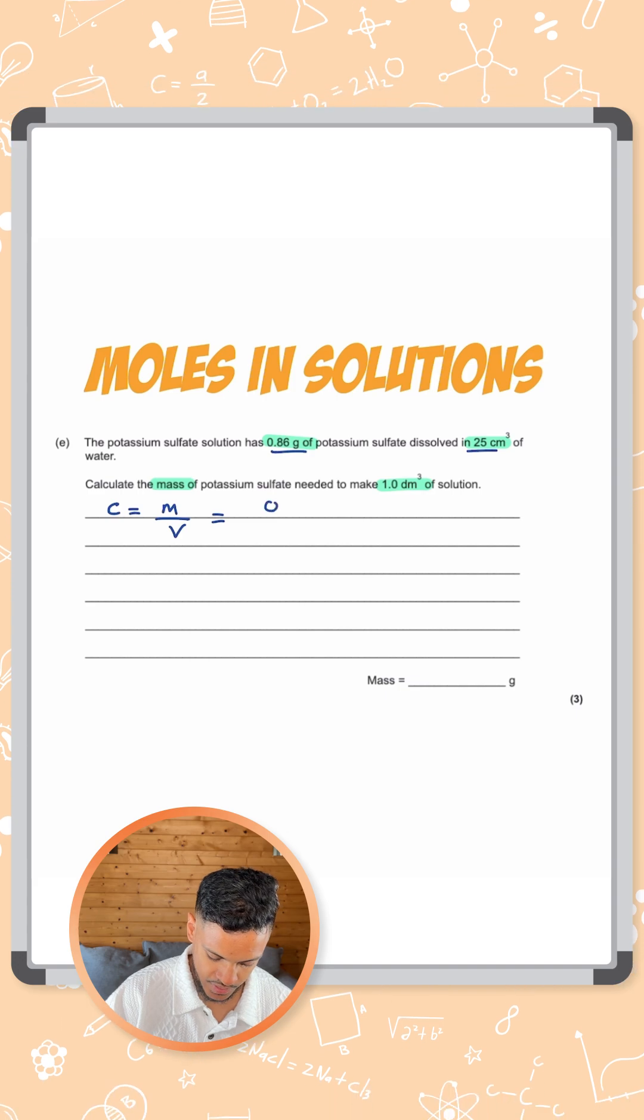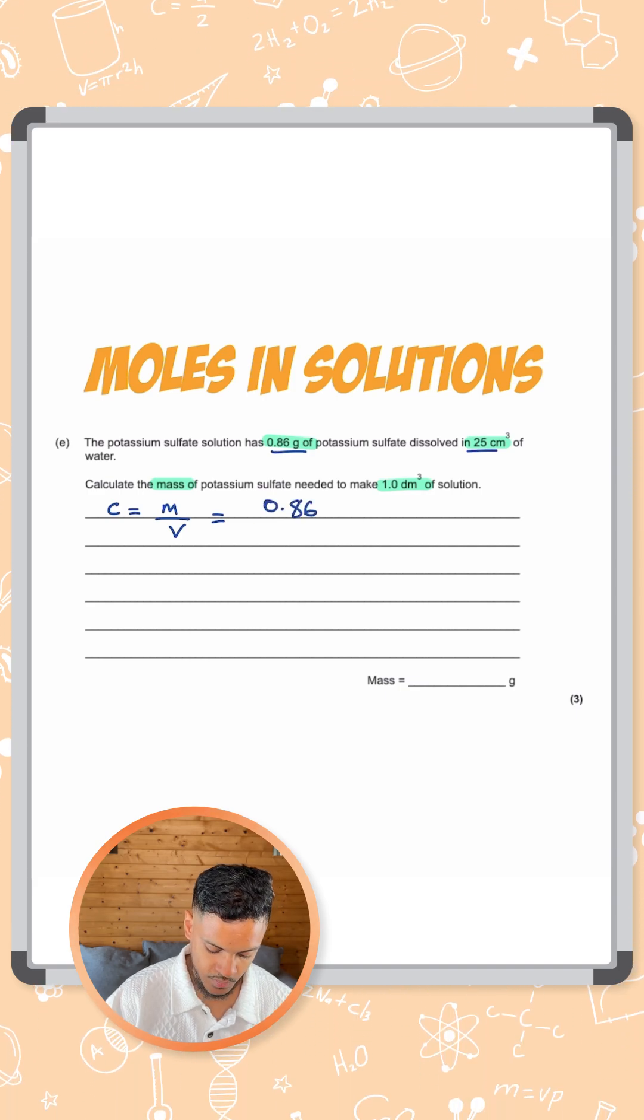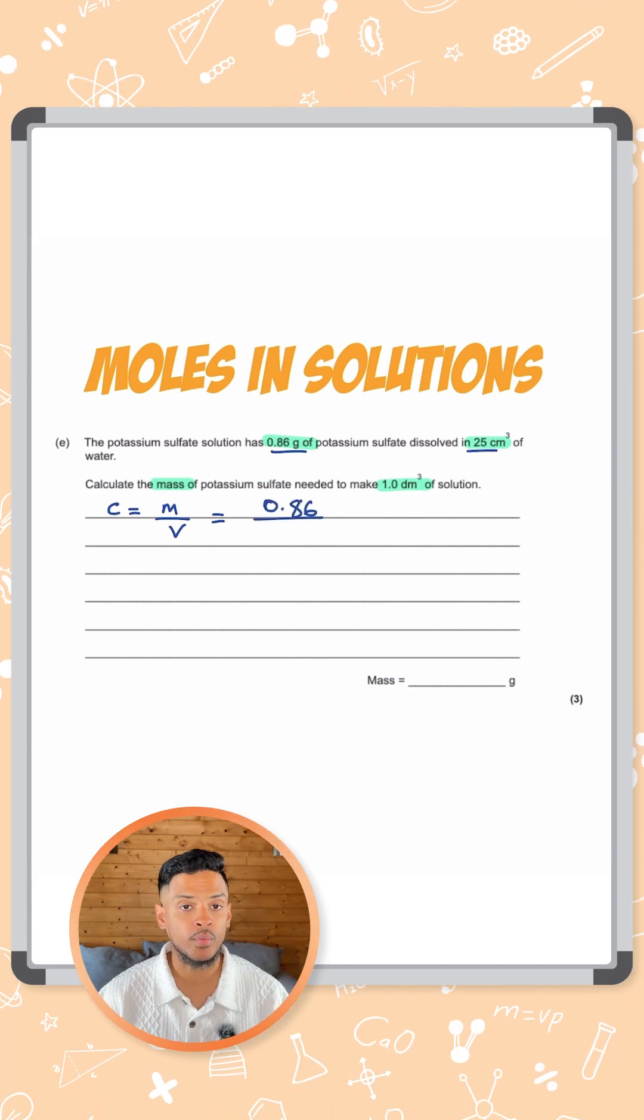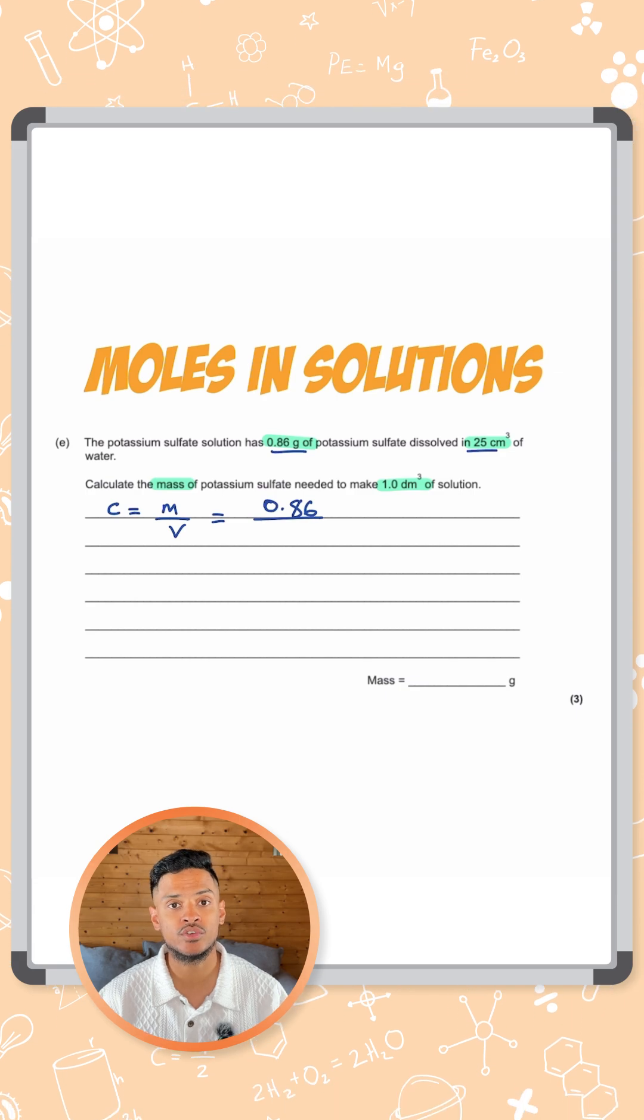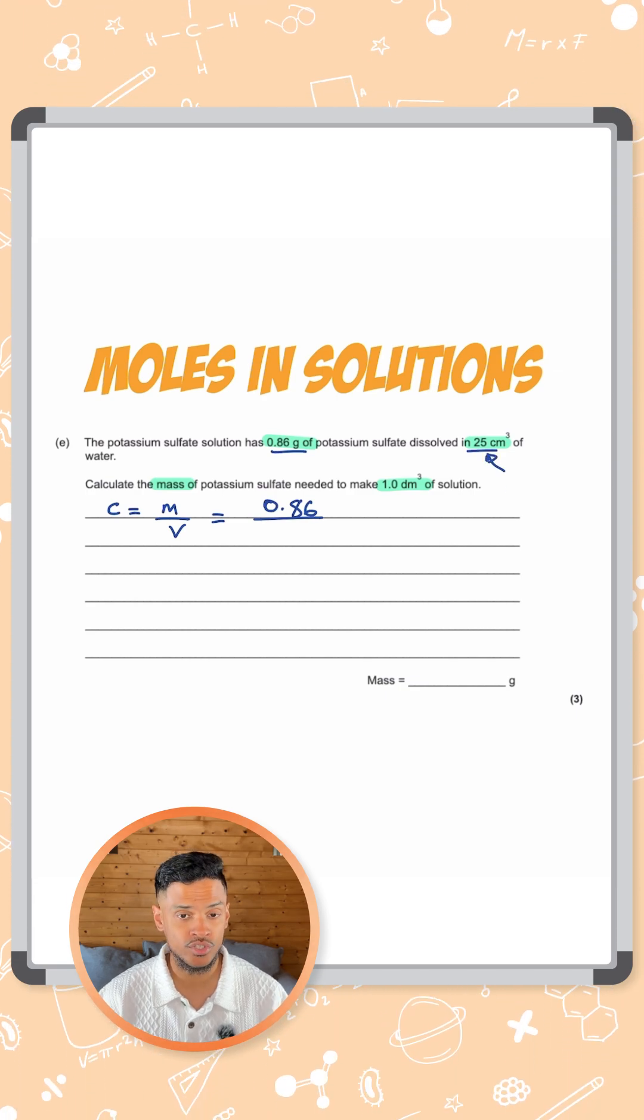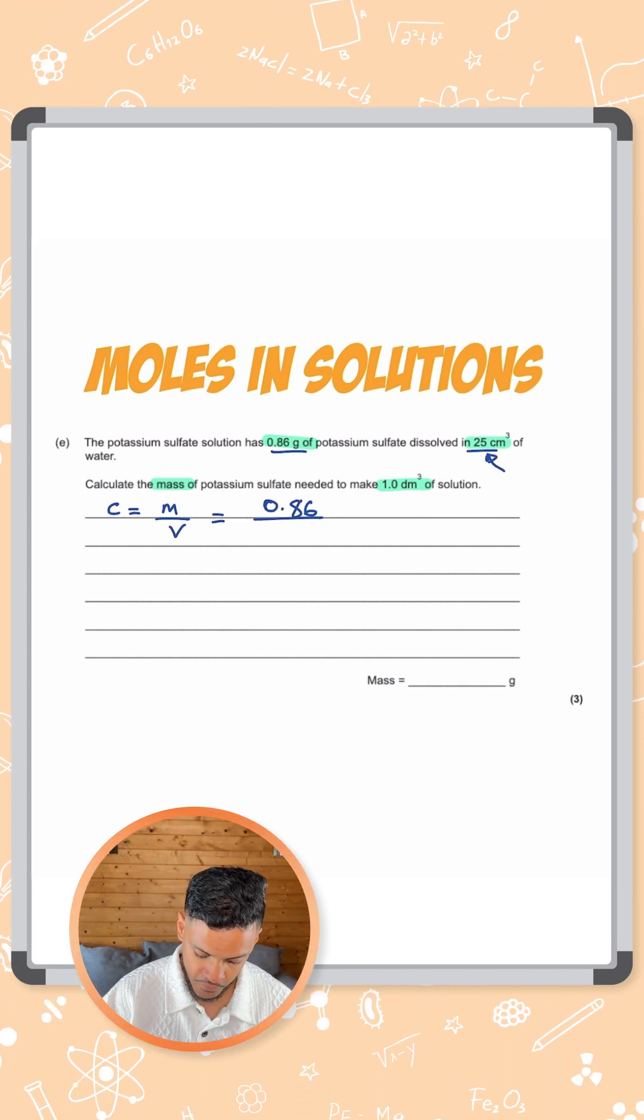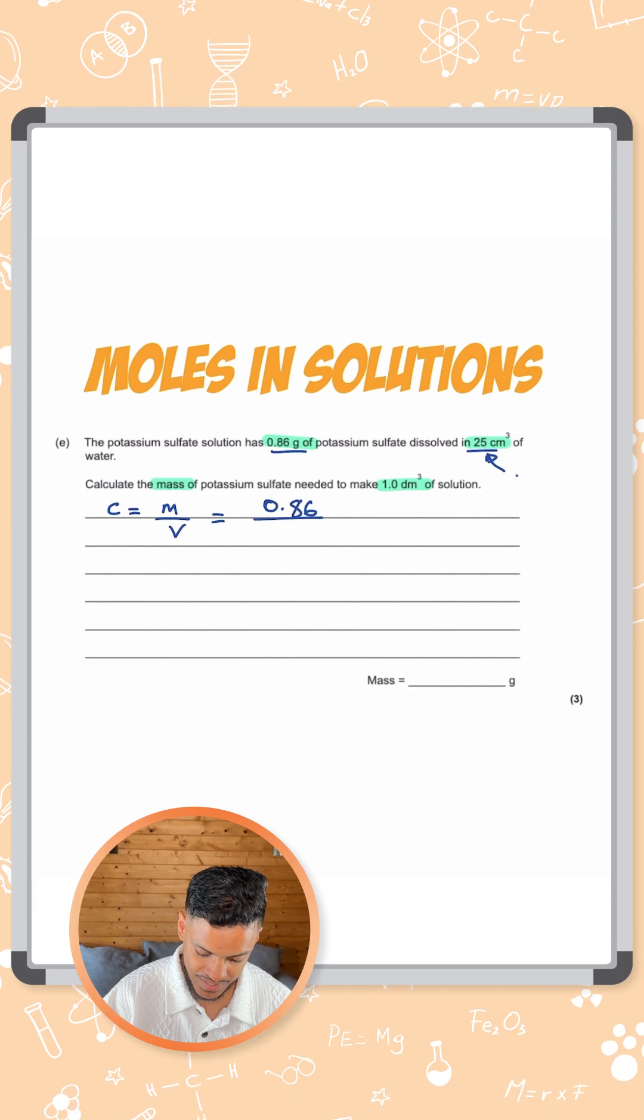Mass is 0.86 grams and you want to divide that by the volume. But what you need to remember here is whenever you're using the moles in solution equation, the volume needs to always be measured in dm cubed.